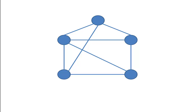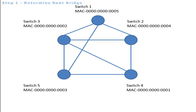The very first step in the spanning tree process is to determine which is the root bridge. Initially, all bridges will assume itself as a root bridge until it receives a BPDU with a lower bridge ID. In order to determine which switch is the root bridge, we find the switch with the smallest MAC address, or we may use bridge priority.